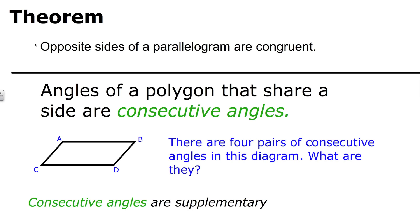Here are some other cool things about parallelograms. The angles of a polygon that share a side are consecutive angles. For this particular parallelogram, there are four pairs of consecutive angles. One pair would be A and B, another pair would be B and D, a third pair would be D and C, and the final pair would be C and A.